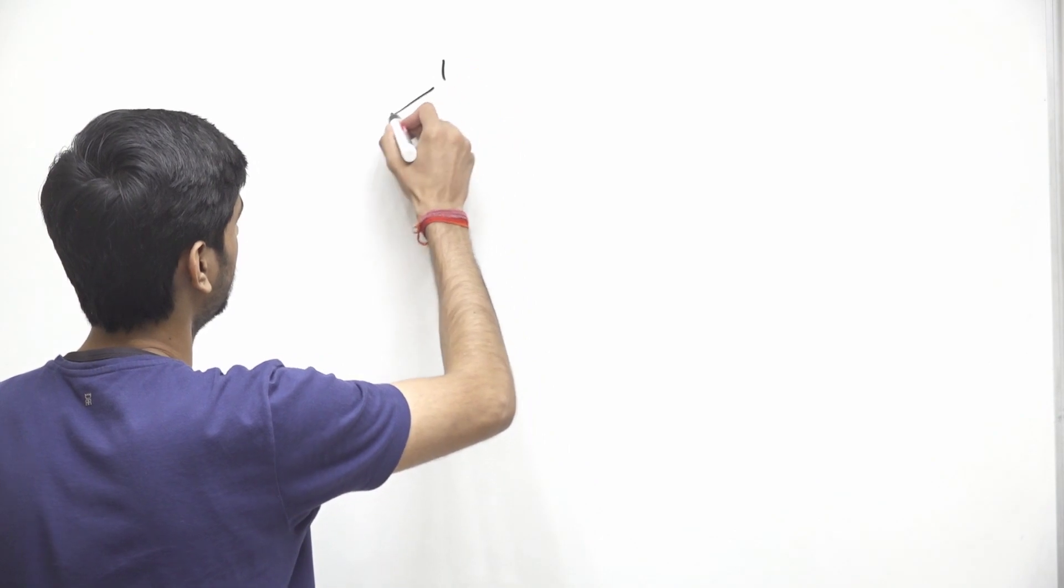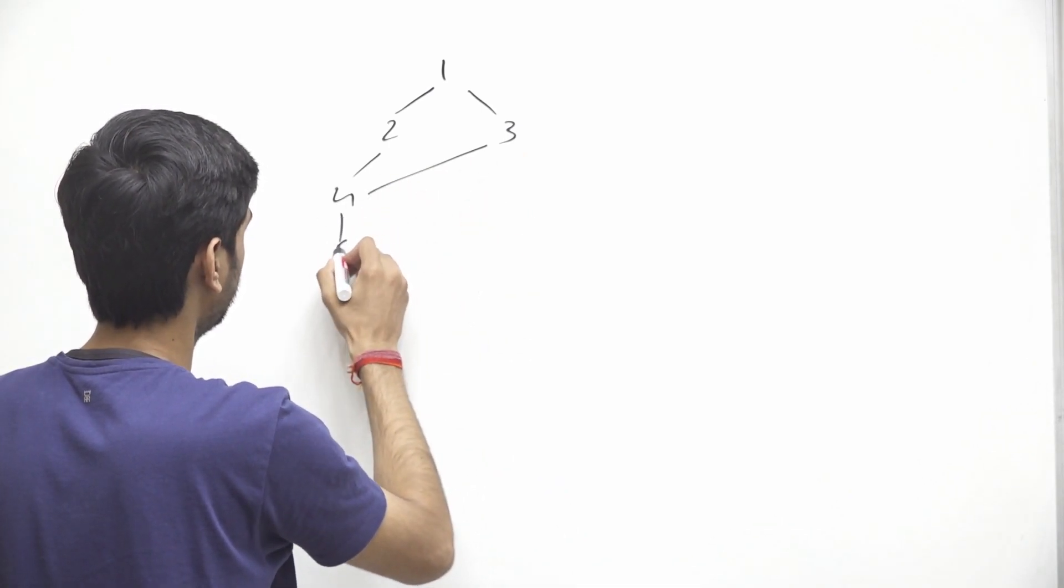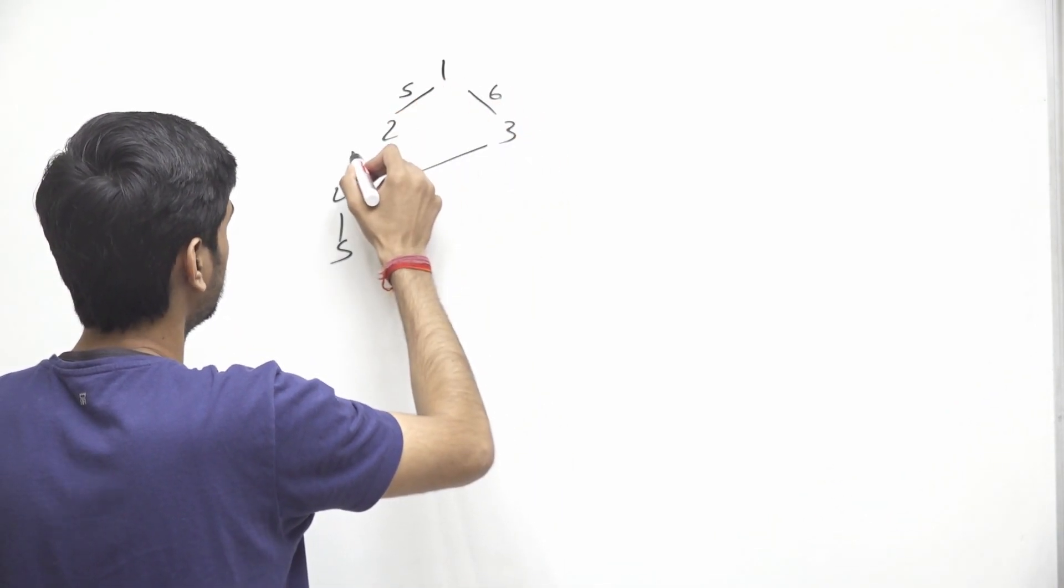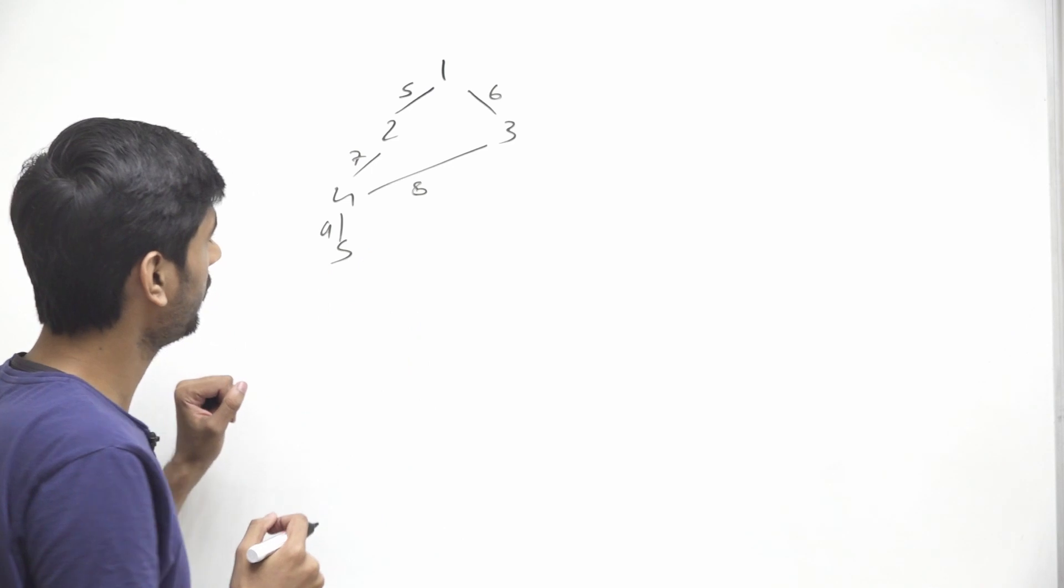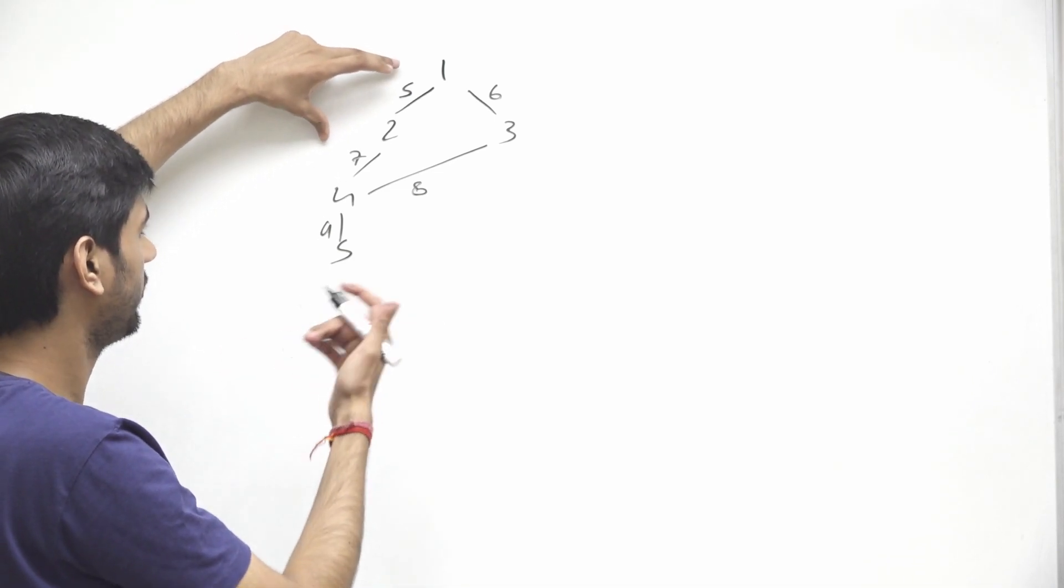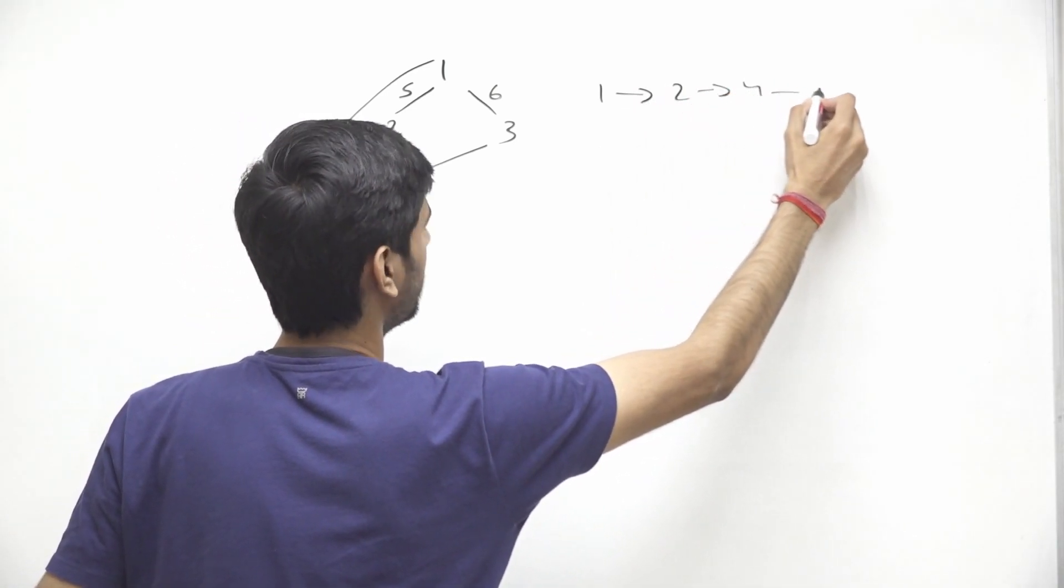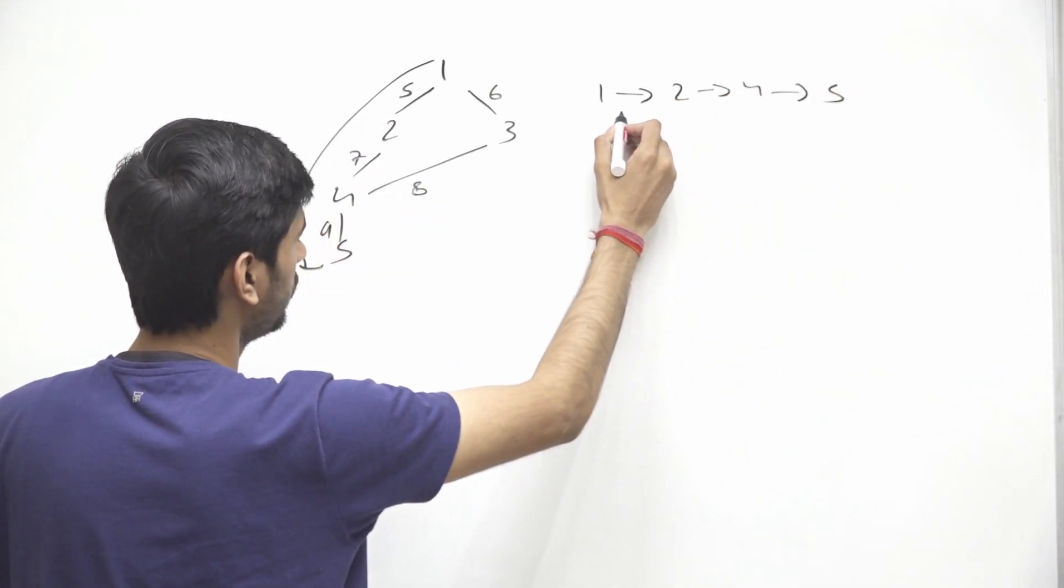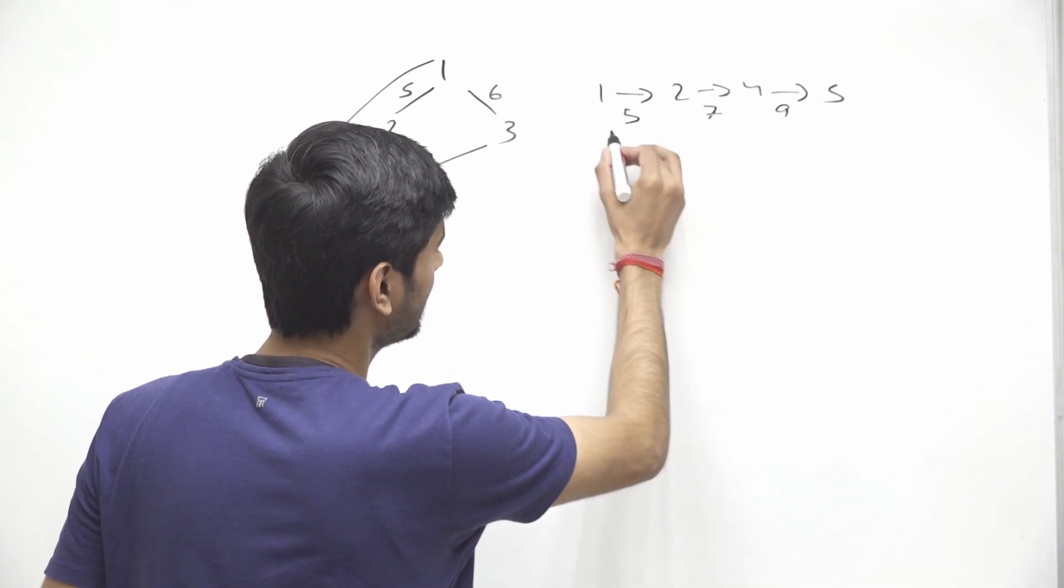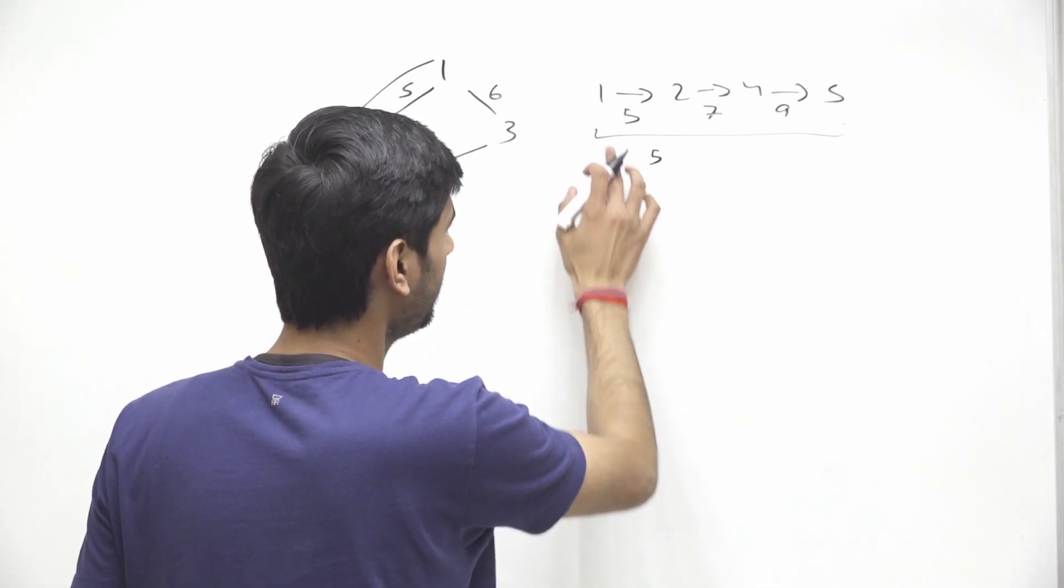So let us say we are given with this graph 1, 2, 3, let us say 4 and this is also connected 5. So now the weights of, we can assume the weights of this as 5, 6, 7, 8 and 9. So now we have to find out the minimum score between any path between 1 to 5. So like one path is from here to here. So if we consider this path 1 to 2, 2 to 4, then 4 to 5. So the weight of 1 to 2 edge is 5, then it's 7, then it's 9. So the score of this path is 5 which is the minimum weight in entire edges which we are using in this particular path. So 5 will be the minimum score.